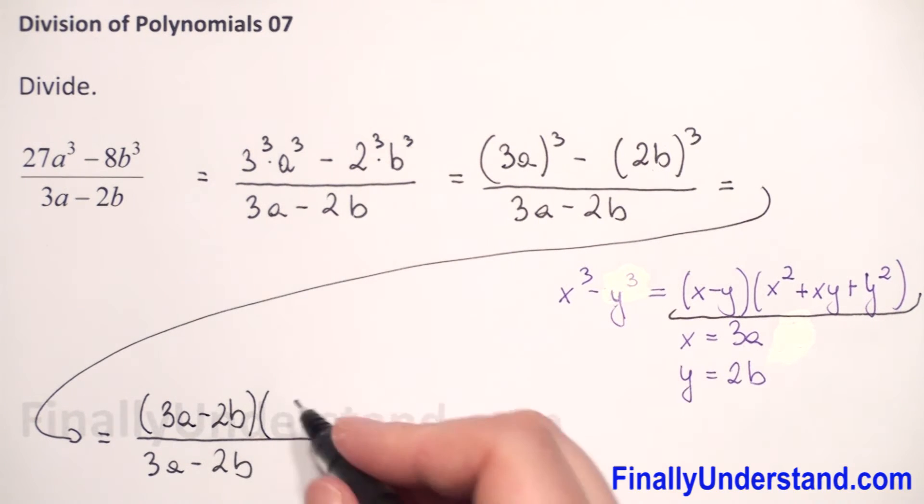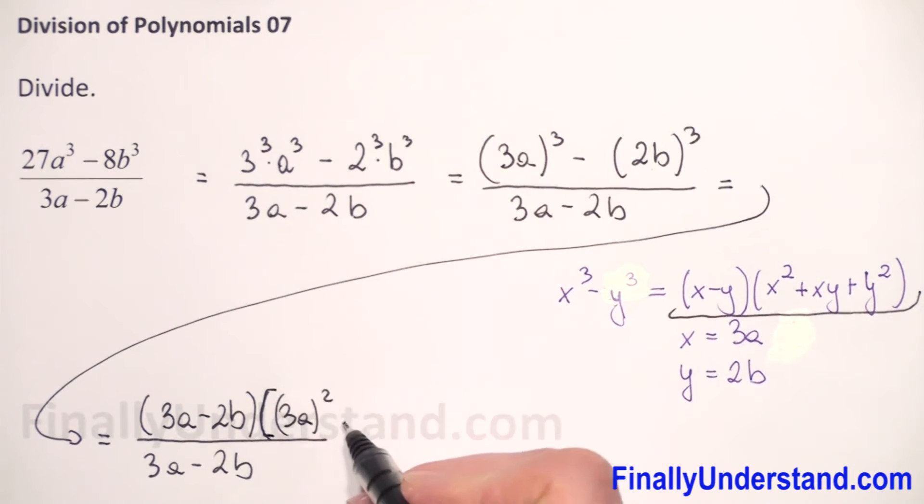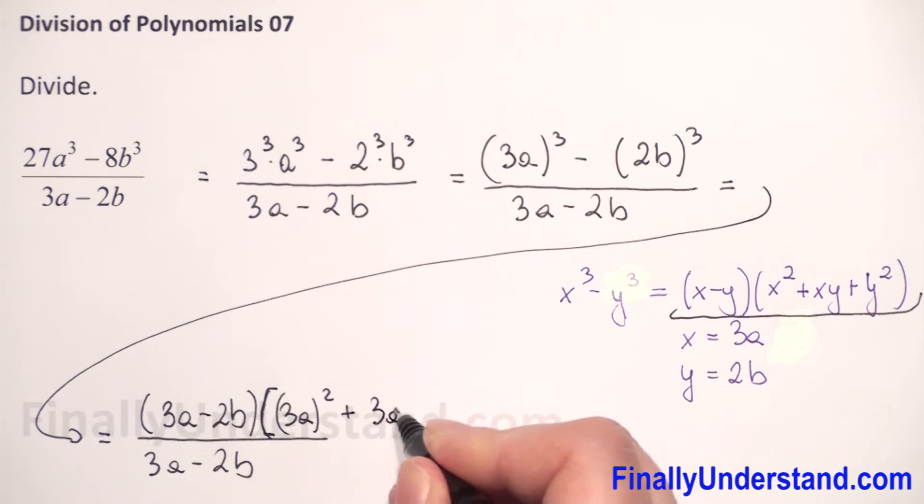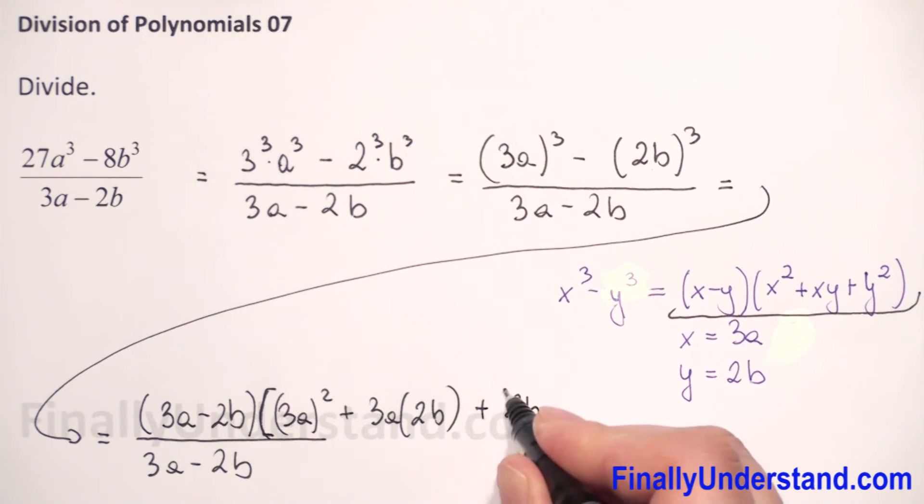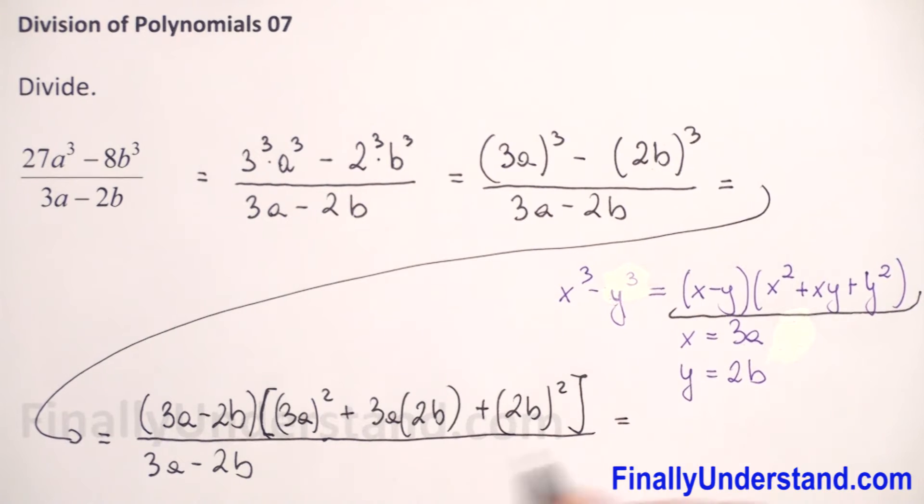Next we have x squared, so it will be 3a to 2nd power. Let me open the brackets now because we have parenthesis inside. Plus, we have x times y, so we have 3a times 2b and we have plus y squared, so it will be 2b to 2nd power.